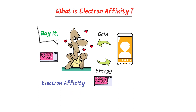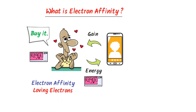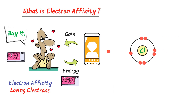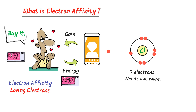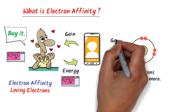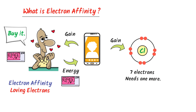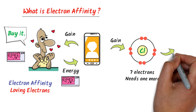So electron affinity means loving electron. Now consider this atom of chlorine. We can see that there are seven electrons present in the outermost shell of chlorine atom. This chlorine atom needs one more electron to complete its octet and get stability. So chlorine atom will gain this electron. After gaining an electron, chlorine will lose energy.